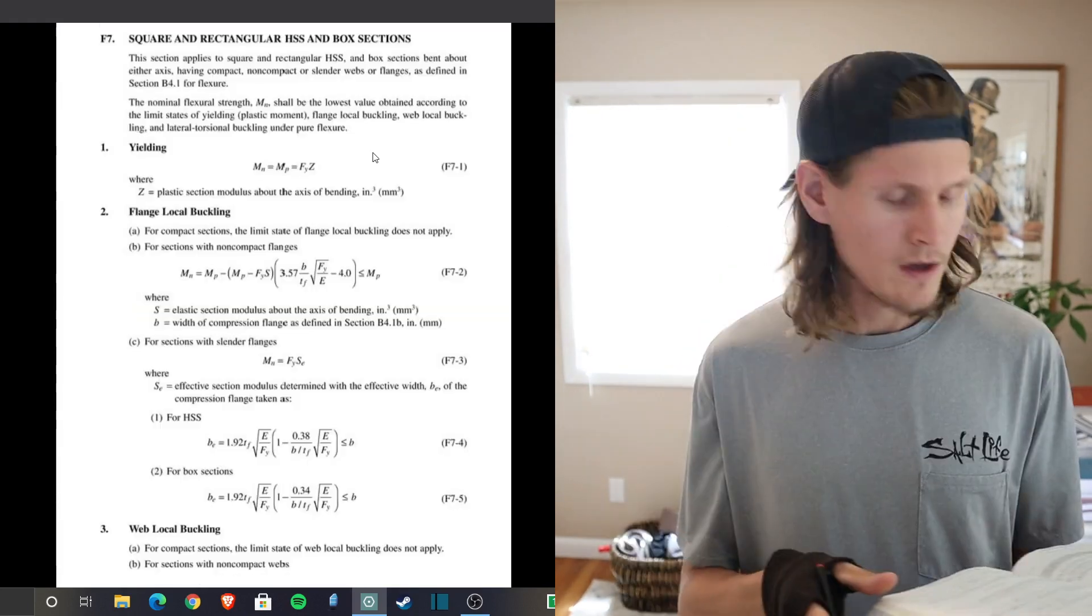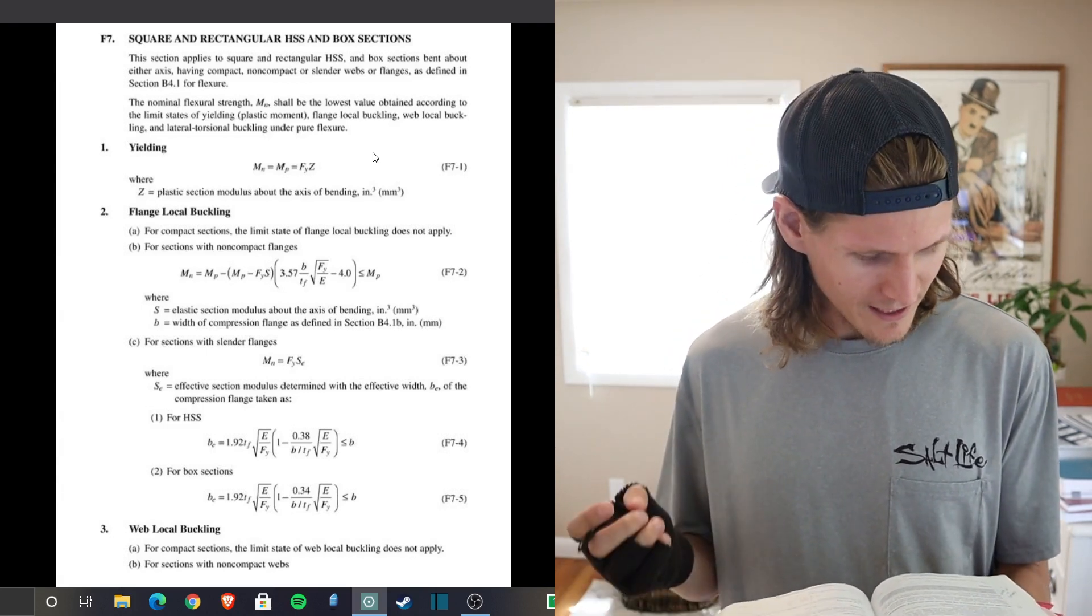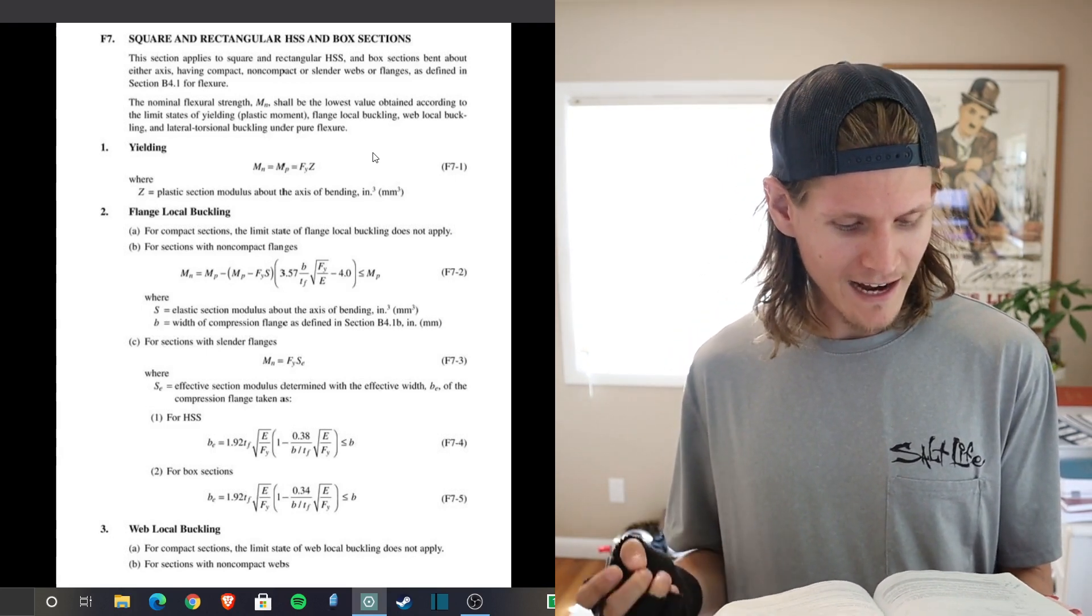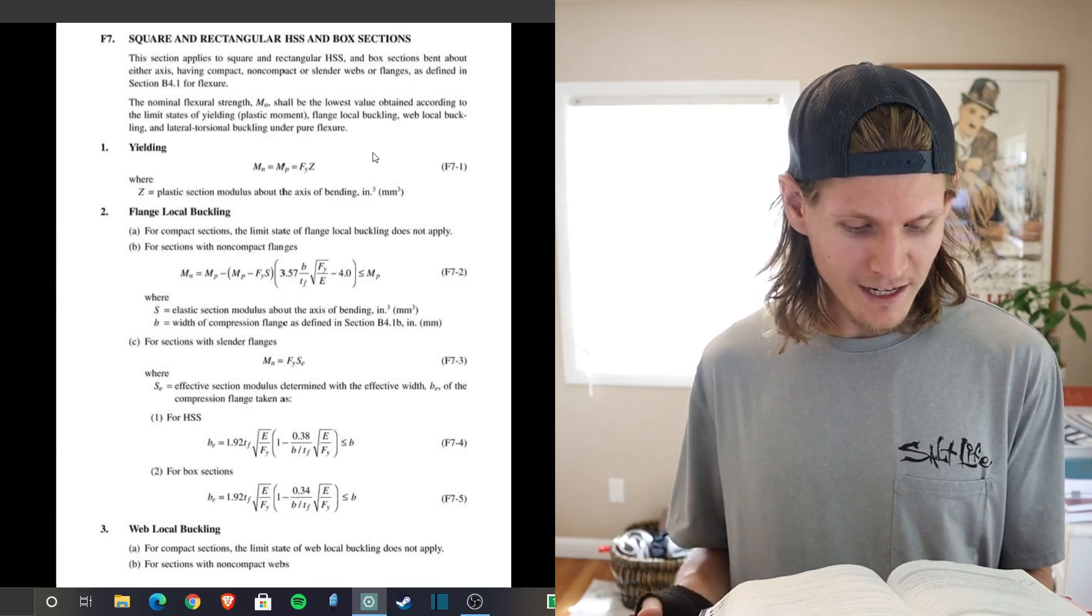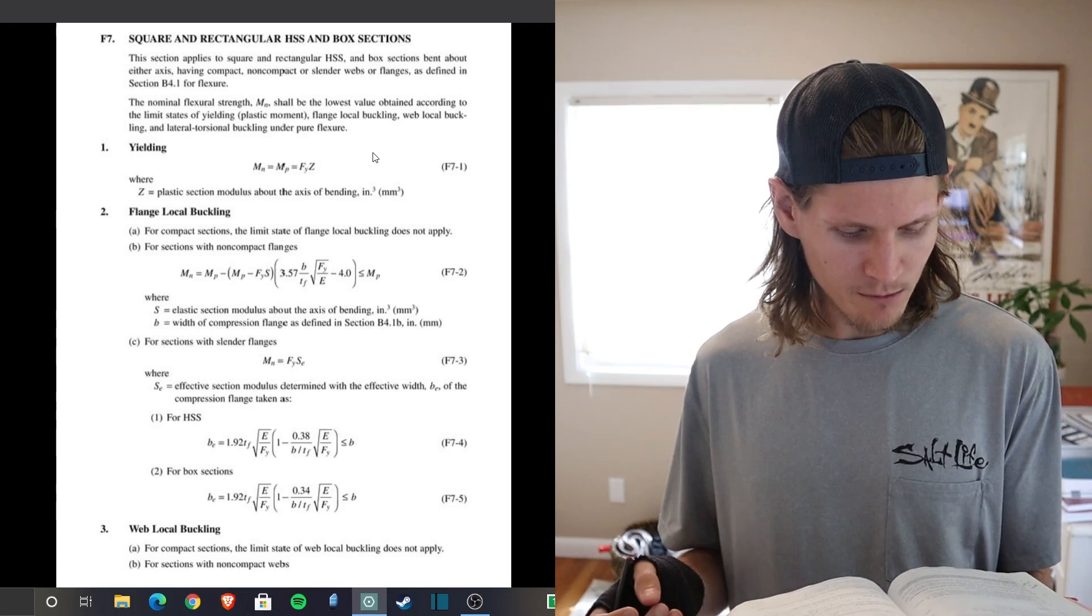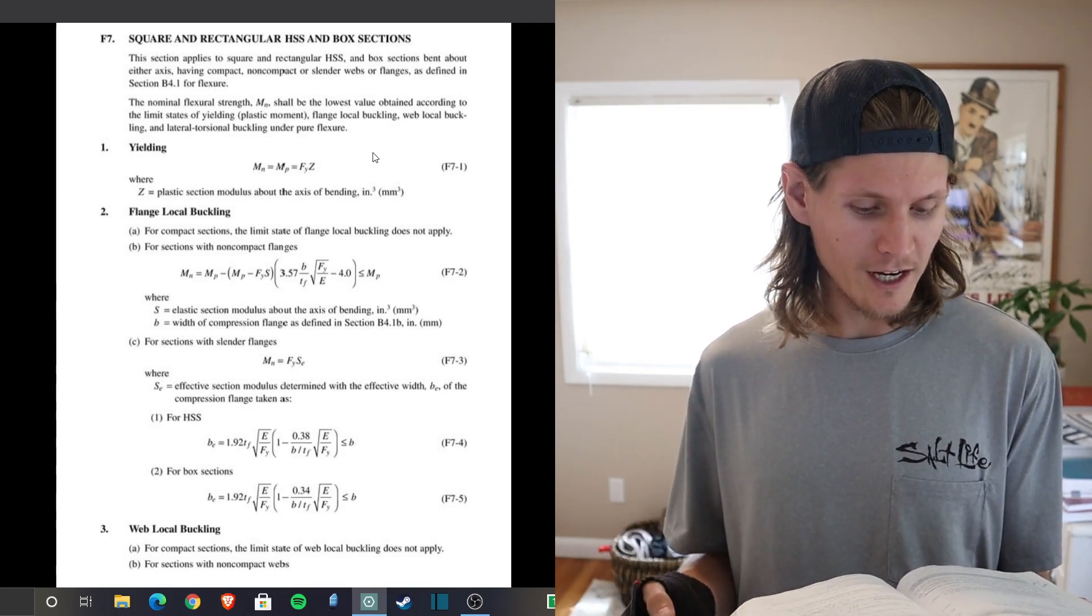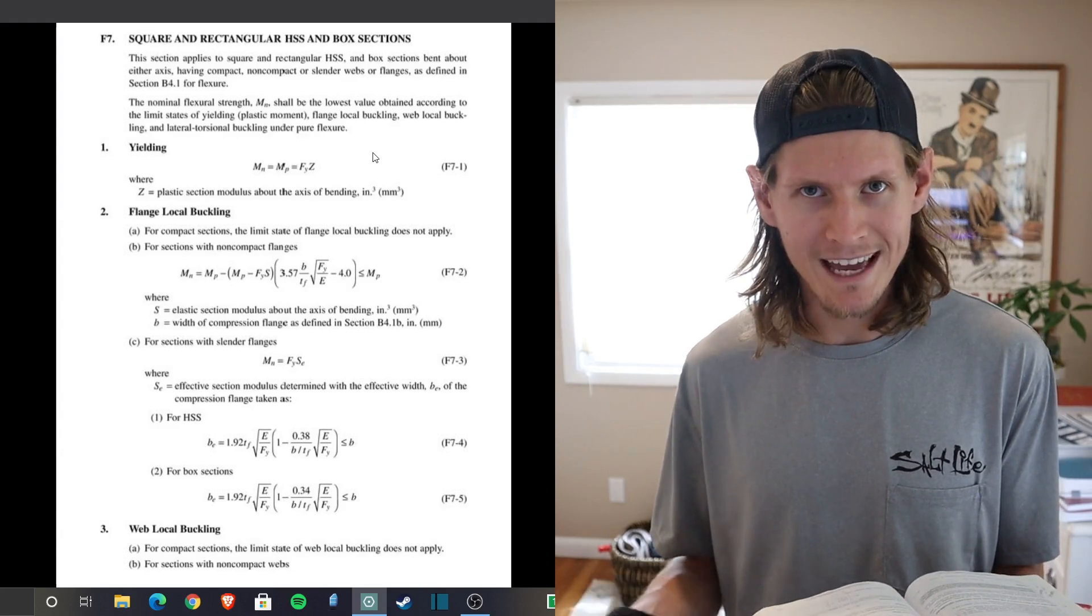Previously they left a user note in the 14th edition that stated very long rectangular HSS bent about their major axis are subject to lateral torsional buckling. However the specification provides no equation for this limit state since beam deflection will control for all reasonable cases.